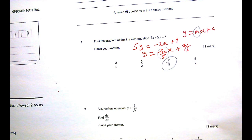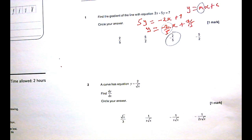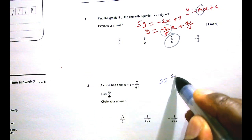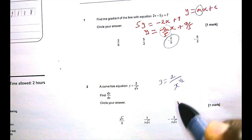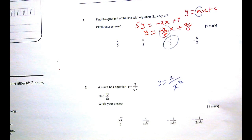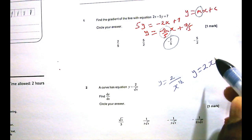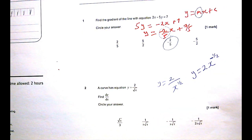Question two: the curve has equation y equals 2 over root x. Find dy/dx. When you see a problem like this, the first thing you want to do is rewrite it in the indices form. So rather than write y equals 2 over root x, I'm going to write y equals 2 over x to the power half. And rather than put the x to the power half at the bottom, I would like to bring that to the top, so it becomes y equals 2 x to the negative a half.